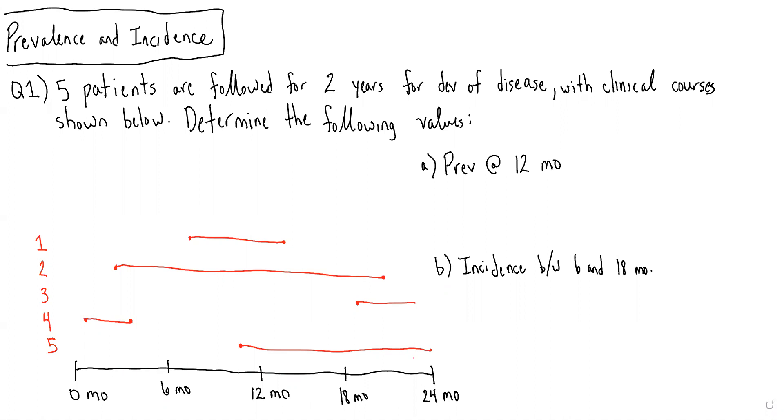So in this case, there are five patients who are followed for two years for development of a disease with clinical courses as shown below, and we are asked to determine the following values.